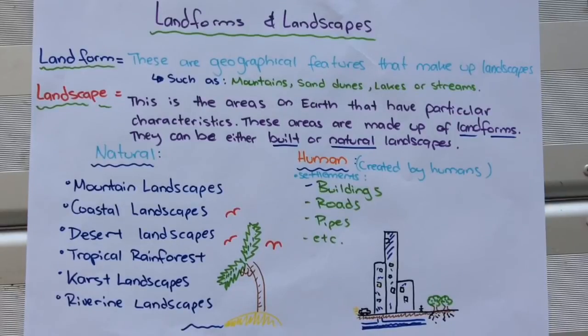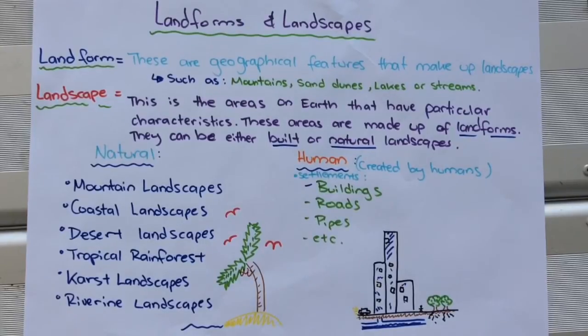Landscapes are areas on earth that have particular characteristics. These areas are made up of landforms, so they can either be built or natural.